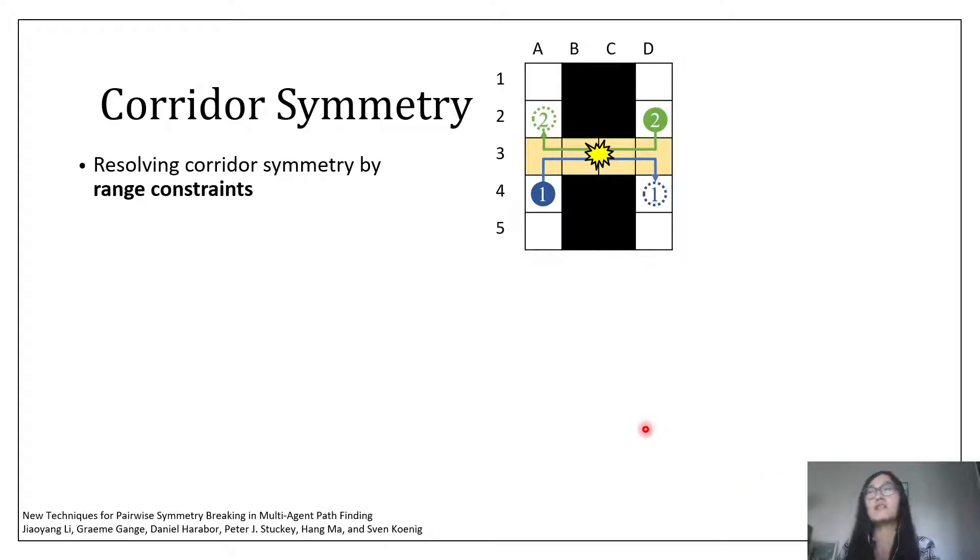Therefore, to resolve all collisions between these two agents, we say that actually one of the agents has to use the corridor after the other agent. For example, if we let agent 2 use this corridor first, then agent 1 can enter this corridor only after agent 2 left the corridor. Therefore, the earliest time step for agent 1 to travel through the corridor and reach location D3 is time step 8.